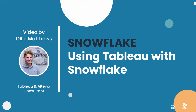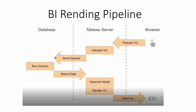As David Spezia started out, I think it's very useful to consider this diagram here. It's always good to bear in mind what's happening behind the scenes when we are interacting with our vizzes. Initially we interact with our dashboard or viz in some way on the browser. This will then go back to the server and be interpreted, and then SQL queries will be sent back to the main database, which might be Snowflake, which are then run in order to return the data from the database, which in turn generates the model and then renders the viz and sends this visual information back to the browser.